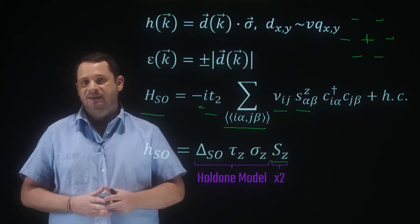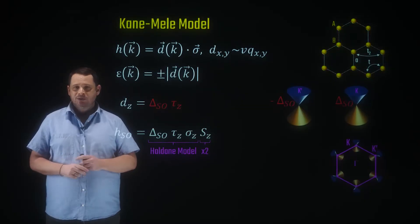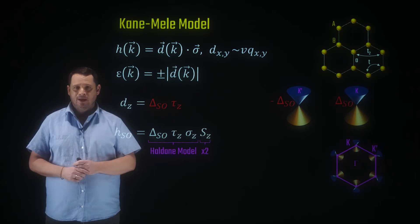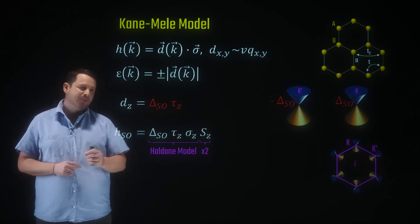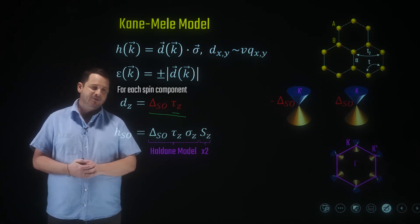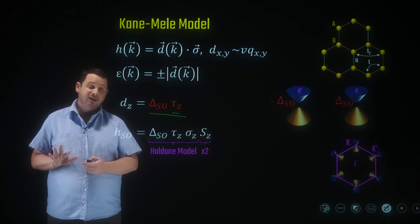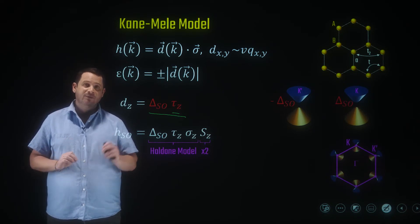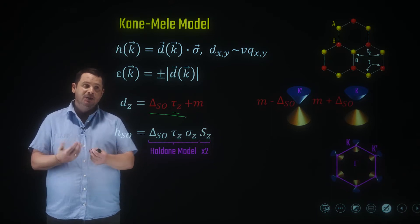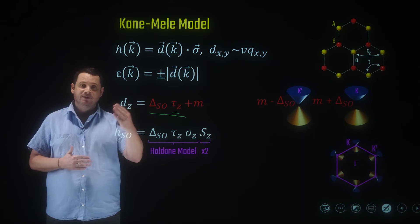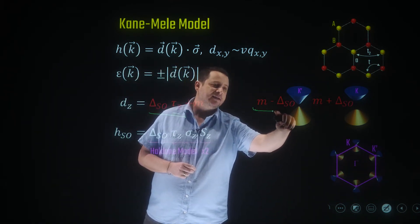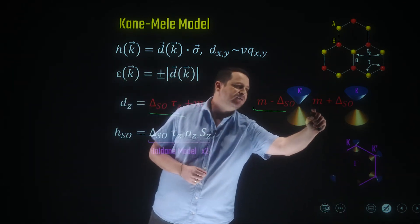Let's see how we get it by actually solving the Kane-Mele Hamiltonian. All we have to consider is how the DZ component of the D-vector changes when we introduce spin-orbit coupling. What we get for the DZ component is a term that depends on and has opposite signs on the K and K' values. This means we induce a gap at the Dirac dispersion; however, this gap will have opposite signs on the K and K' values. If we also introduce the bipartite lattice, we add a uniform mass term that will be added or subtracted from the spin-orbit gap, which means we may have a situation where we get a negative gap at some values and a positive gap at others.